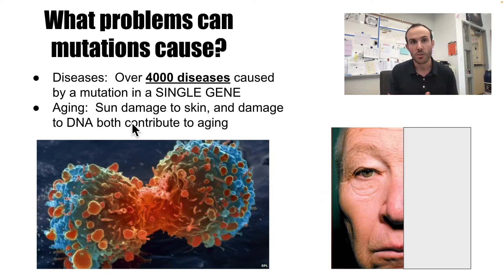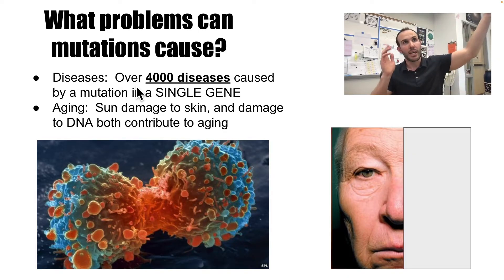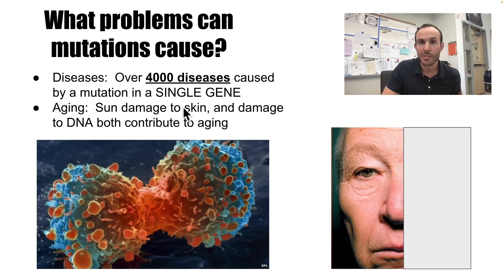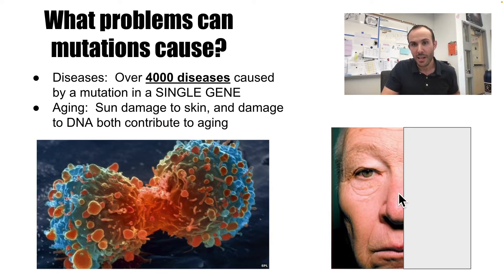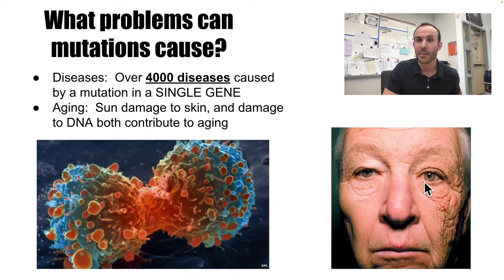Not all mutations cause problems, but a lot of them do. Over 4,000 diseases are caused by a mutation in a single gene — meaning just a few letters out of place can cause over 4,000 different diseases. Another way mutations can happen is through sun exposure. Damage to the skin can actually damage your DNA and contribute to aging. This person was a truck driver for many years — one side of their face faced inside the truck, the other faced the sun, and you can see all the damage the sun did.